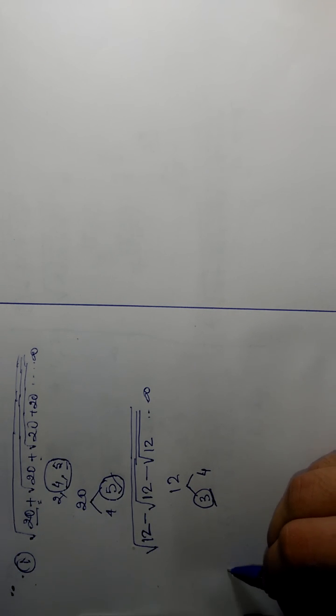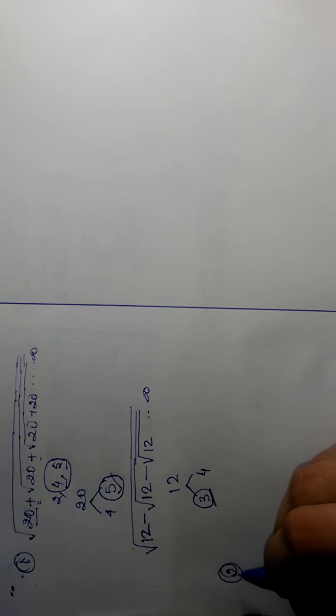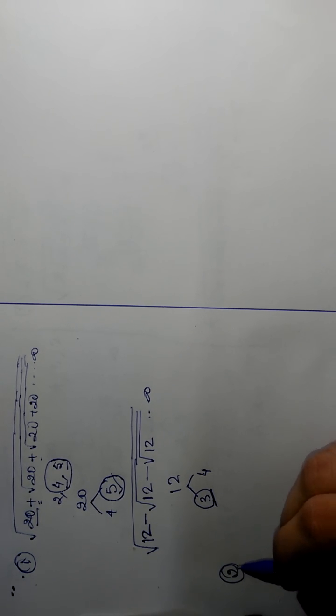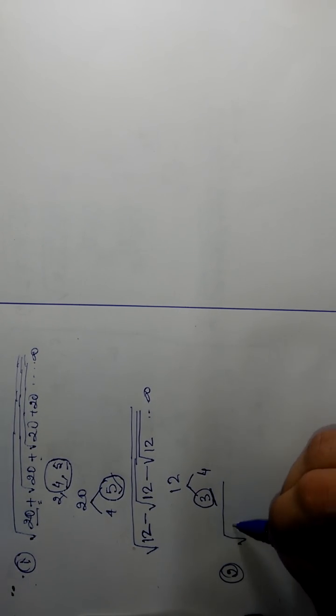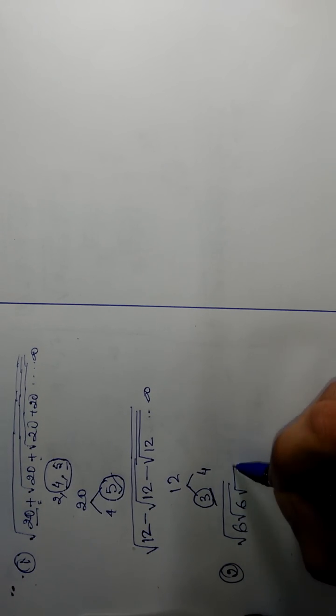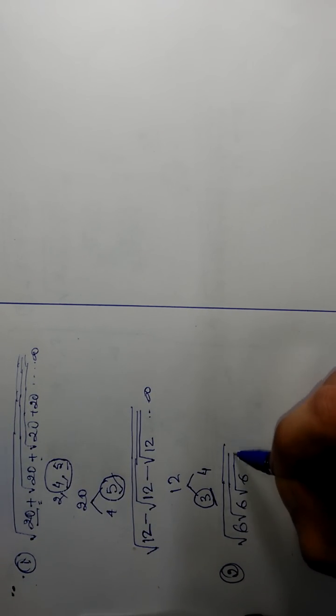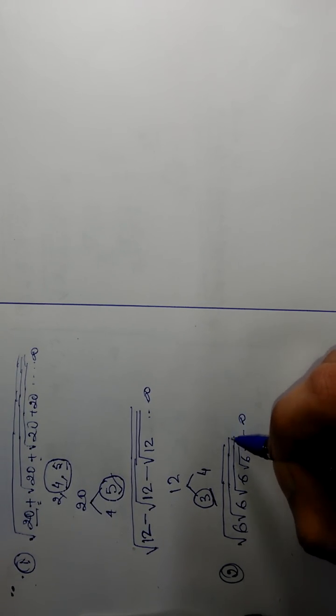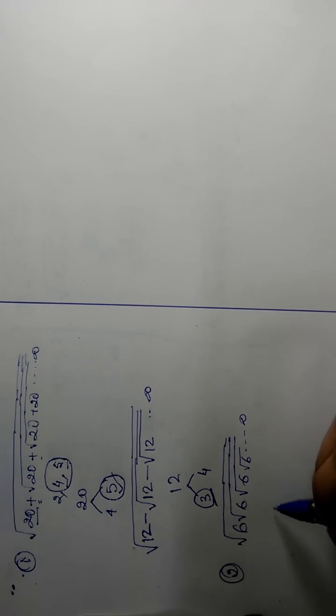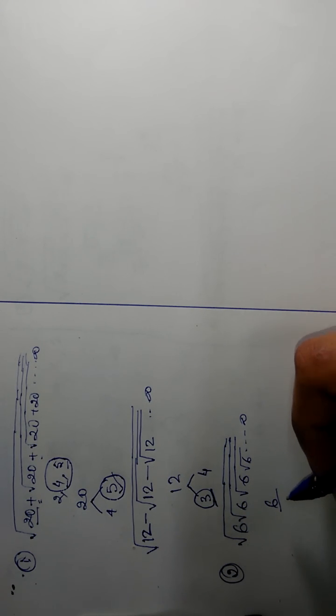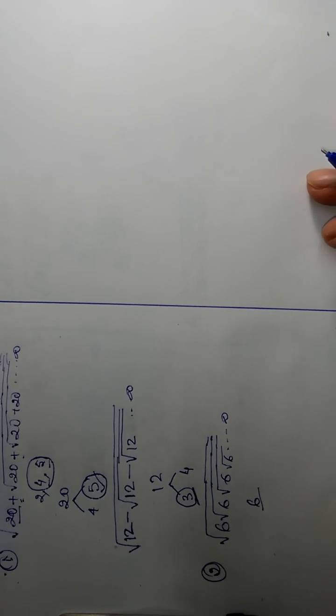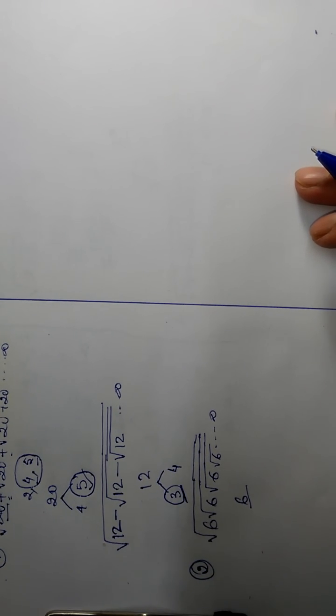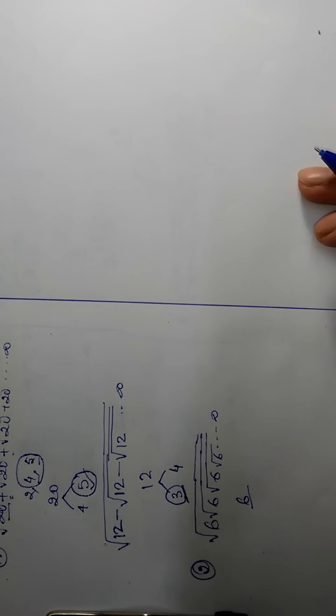Now we will see the second type of problem. It is under root 6, 6, 6, 6, under root 6 up to infinity. There is nothing much in this question. The answer is 6 itself. Just remember this: the answer is 6.